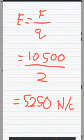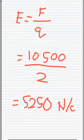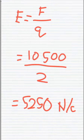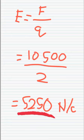We use the formula E equals F over q, which is F is 10,500 and q is 2. So we calculate them and we will get 5,250.